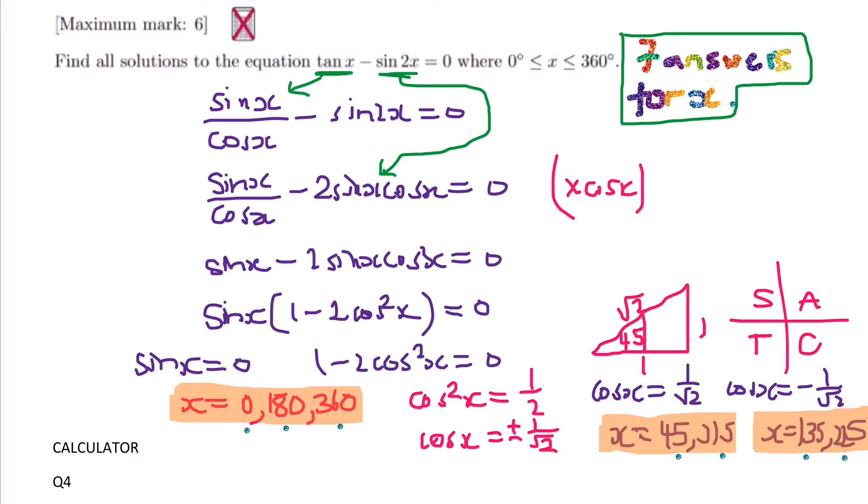Then multiply by cos x here, which eliminates the fraction. So that cancels out this cos x, and then it turns this cos x into cos squared x. So I end up with sin x minus 2 sin x cos squared x, that's a squared if you can't see it, equals 0. Then I'm not going to rearrange it and then cancel out, because I want to find as many possible angles as I can.